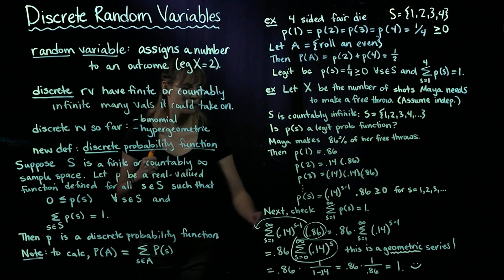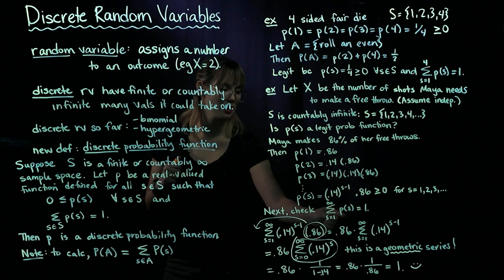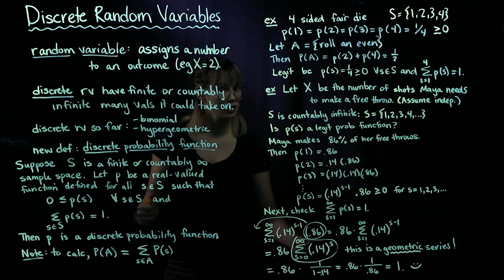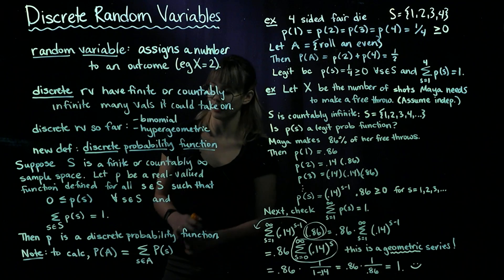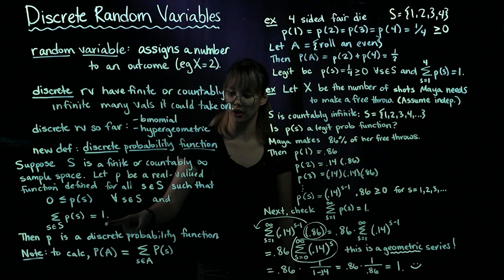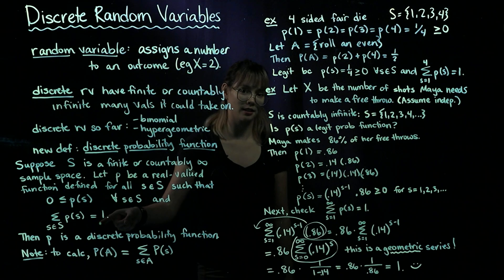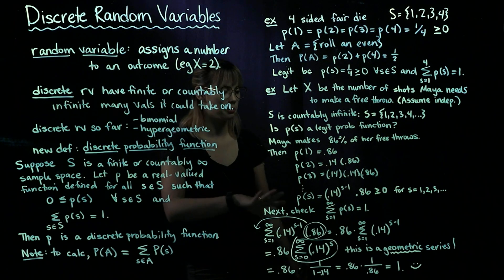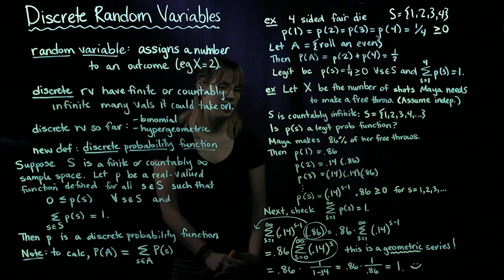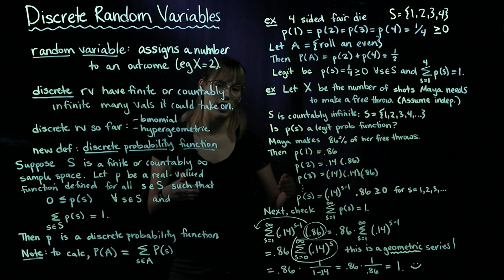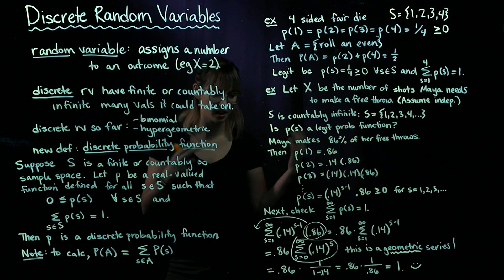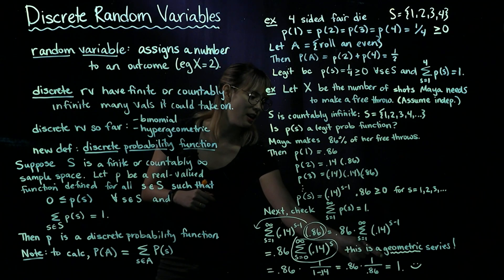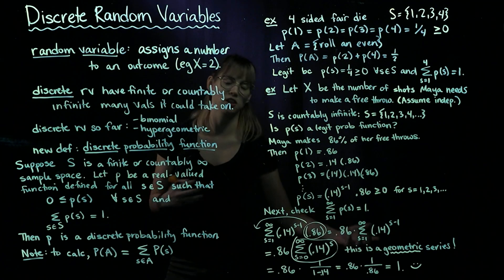So that's great news, because we've shown that the sum of P of S from S equals 1 to infinity — or in other words, the sum of P of S for all S in our sample space — is equal to 1. That's exactly what we needed to show in order to show that P of S is a legit probability function. This is a legit probability function, and later we'll see that X, the number of times you have to try in order to get a success, is going to have what's called a geometric distribution. That comes from the fact that its sum is based on the geometric series.